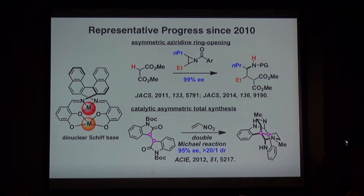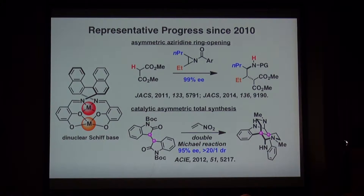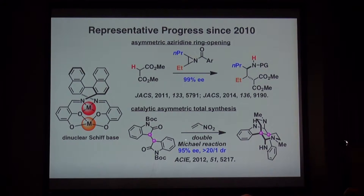I'd like to show you some recent progress in bi-metallic catalysis. Recently, I'm focusing on bi-metallic Schiff base catalysis. The stereodifferentiating ability of the bi-metallic Schiff base catalysts is extremely high — even a subtle difference like normal propyl and ethyl can be recognized perfectly. We succeeded in the asymmetric ring-opening reaction with perfect enantioselectivities, and also succeeded in application to natural product synthesis, using double Michael reactions for the construction of β-vinyl quaternary carbon stereocenters to accomplish very concise total syntheses.